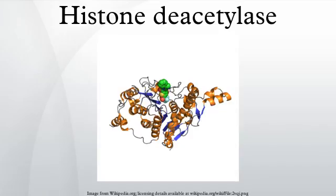Class IV contains just one isoform, which is not highly homologous with either RPD3 or HDA1 yeast enzymes, and therefore HDAC11 is assigned to its own class. The class III enzymes are considered a separate type of enzyme and have a different mechanism of action — they are NAD+-dependent, whereas HDACs in other classes require Zn2+ as a cofactor.